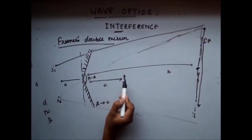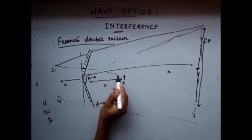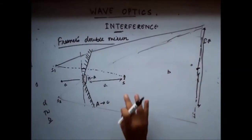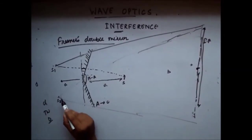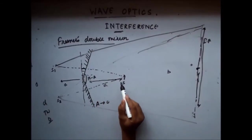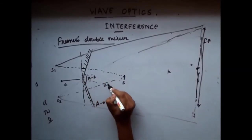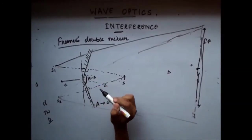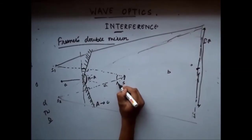Let us draw a normal from the source to the mirror. This normal will pass through both the source S and the virtual source S1. Similarly draw S2 to its normal. In the resulting quadrilateral, this angle is 90°, this angle is also 90°, and the angle between the mirrors is π minus A. So the sum gives this remaining angle as A.